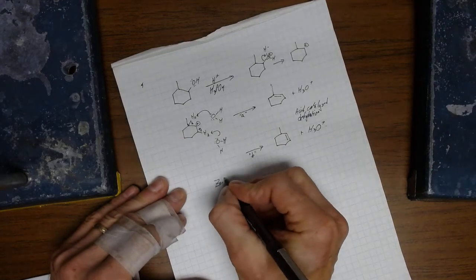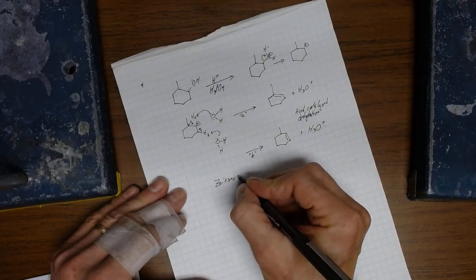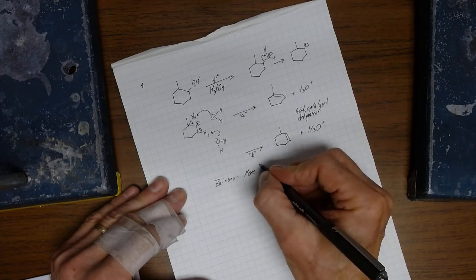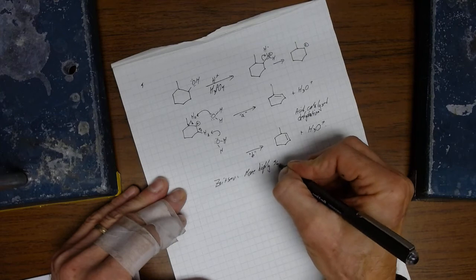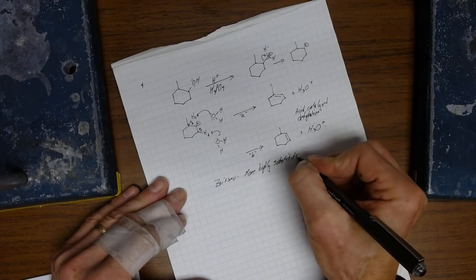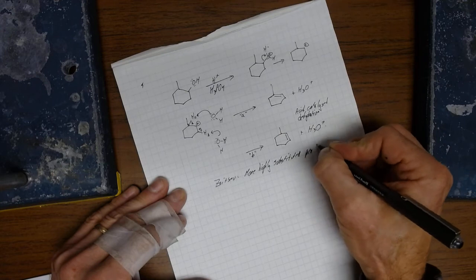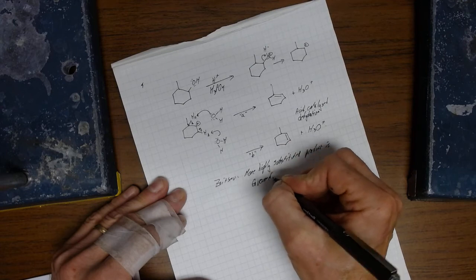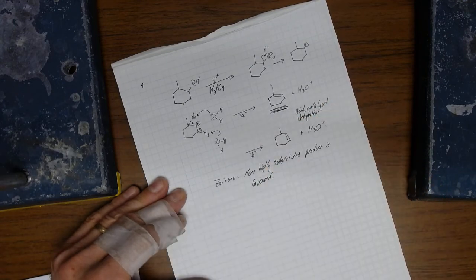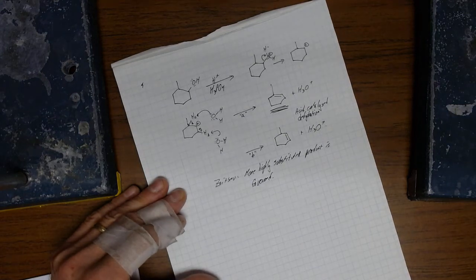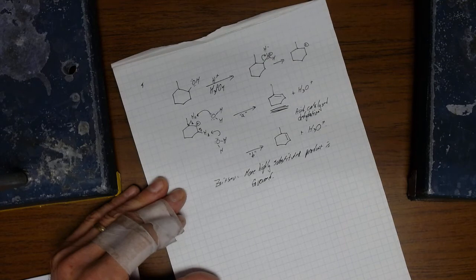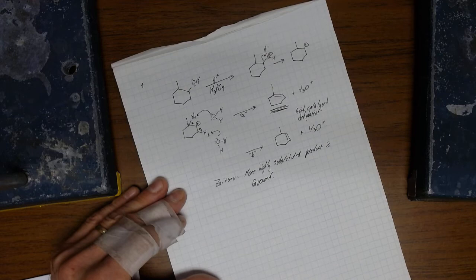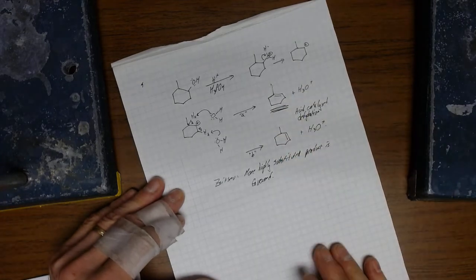Zaitsev. Russian chemist. Notice that the more highly substituted product is favored. It has three chains attached, three alkyl chains attached to the double bond. So, it's triply substituted. Reaction B results in a disubstituted. So, Zaitsev suggests that product A would predominate.